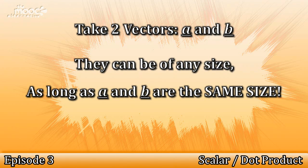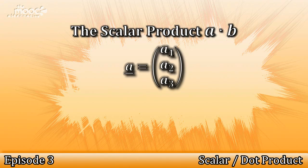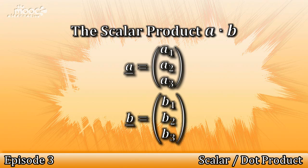So, for our standard example, let them both be 3D vectors. A is equal to A1, A2, A3, and B is equal to B1, B2, B3.